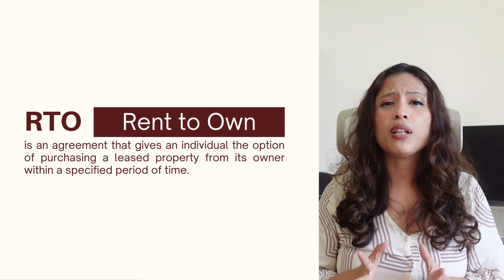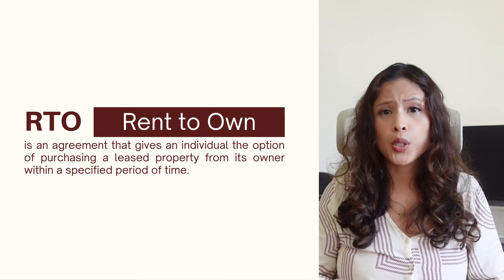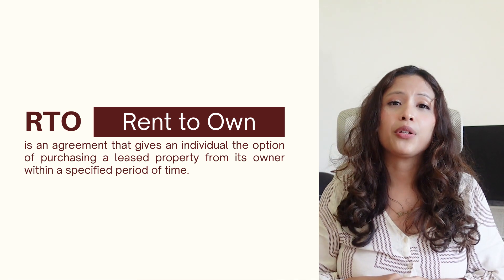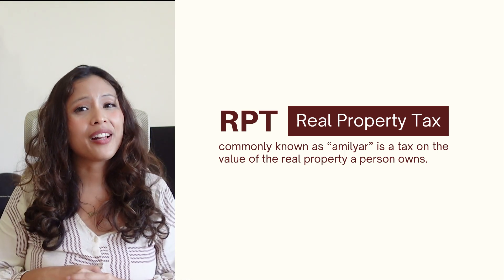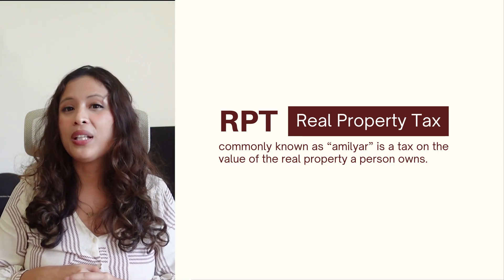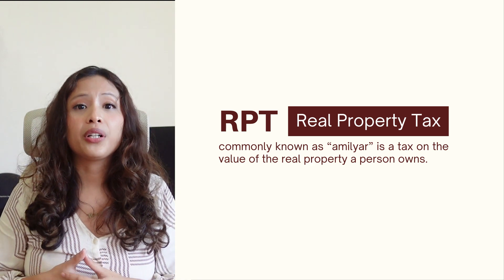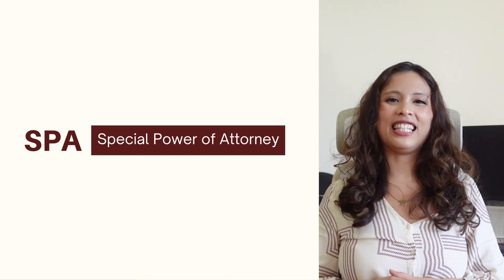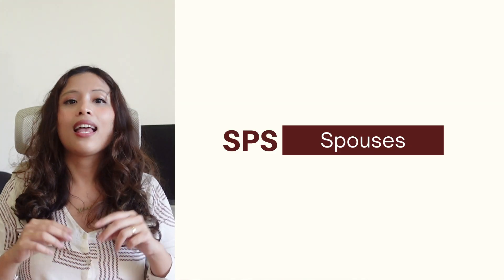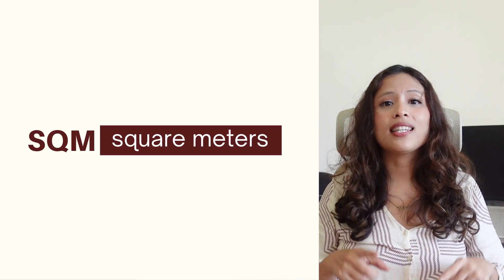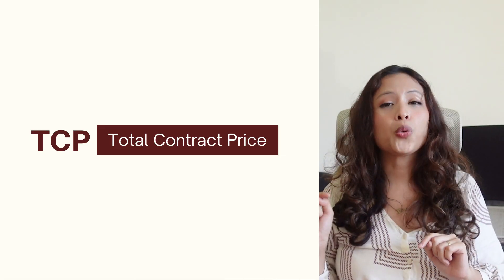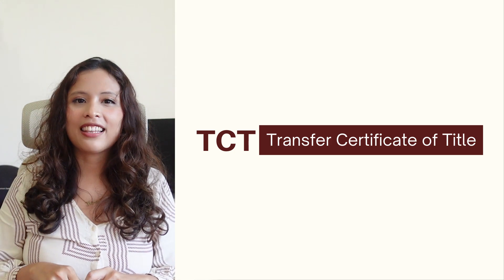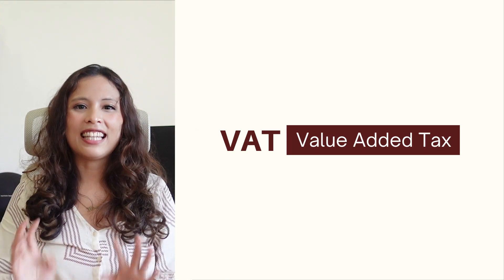RTO, for Rent to Own, is an agreement that gives an individual the option of purchasing a leased property from its owner within a specified period of time. RPT, for Real Property Tax, commonly known as Amilyar, is a tax on the value of the real property a person owns. SPA, for Special Power of Attorney. SPS, for Spouses. SQM, for Square Meters. TB, for Toilet and Bath. TCP, for Total Contract Price. TCT, for Transfer Certificate of Title. VAT, for Value Added Tax.